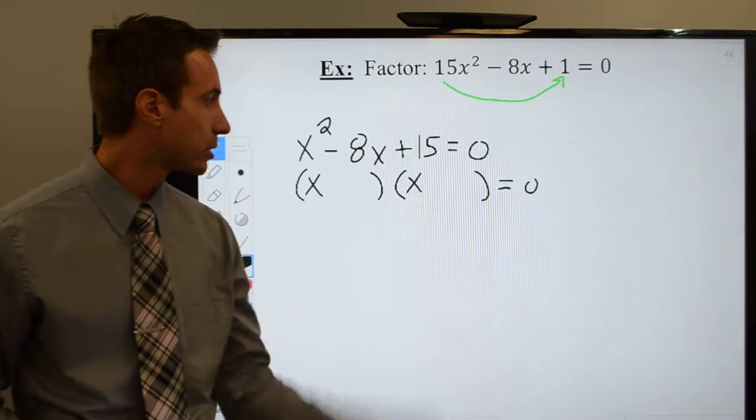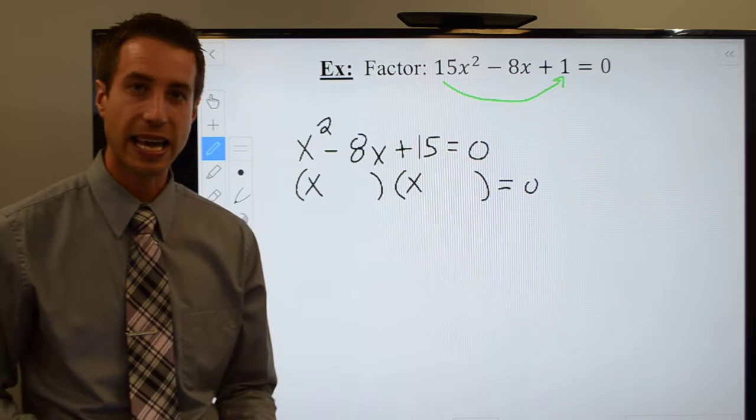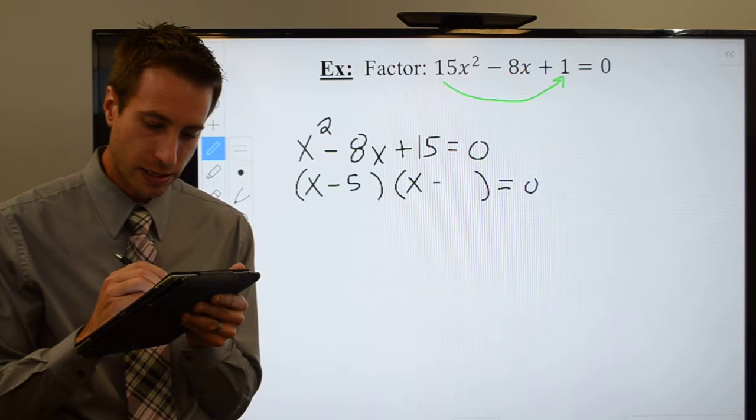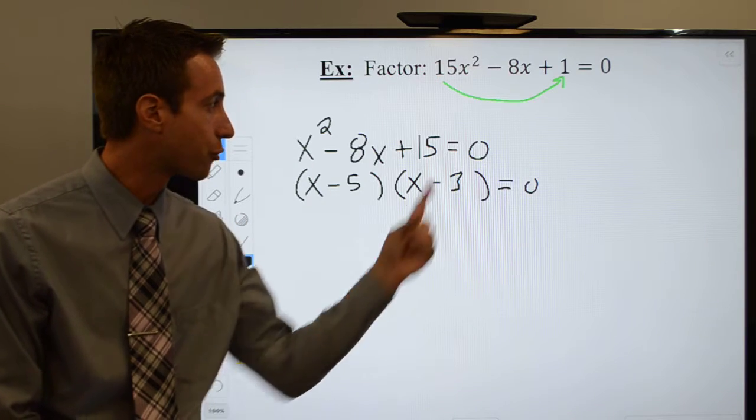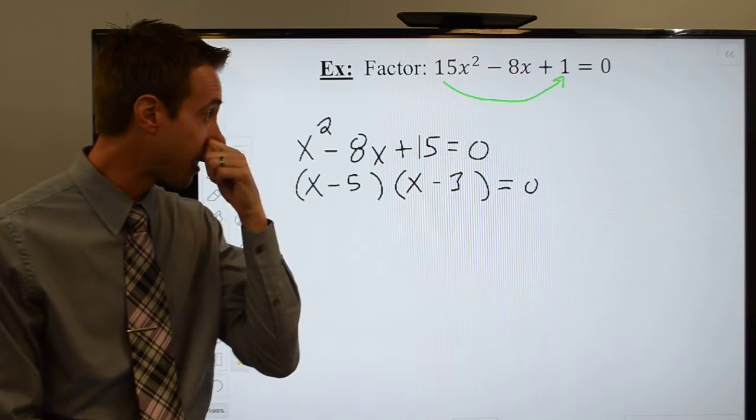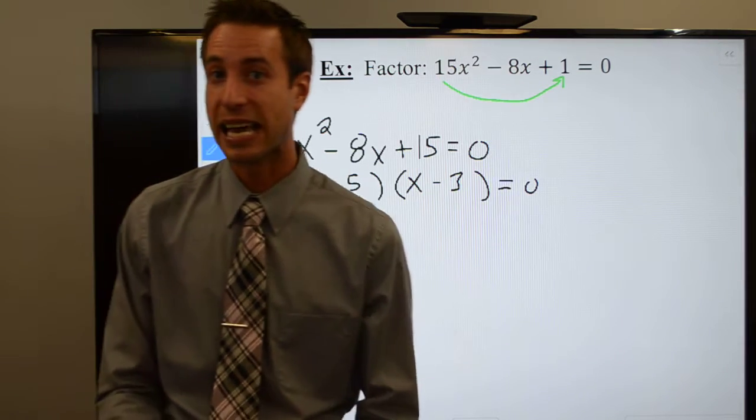Now we need two numbers. Multiply to 15, sum to a negative 8. Well, I think a negative 5 and a minus 3 would give me that. Negative 5 times a negative 3 would be a positive 15. And a negative 5 plus a negative 3, yeah, definitely a negative 8.